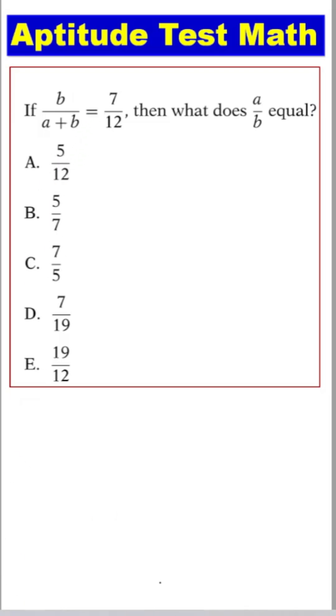If B by A plus B equals 7 by 12, then what does A by B equal? Very simple. First, here is B divide A plus B equals to 7 divide 12.